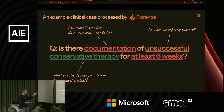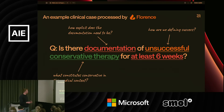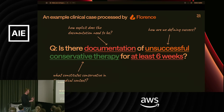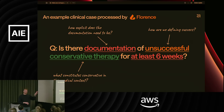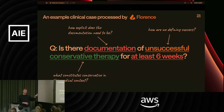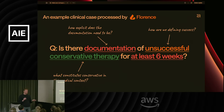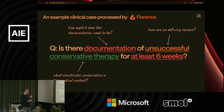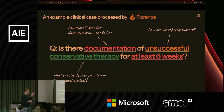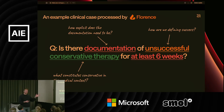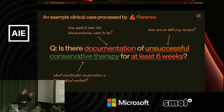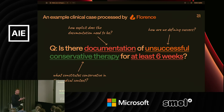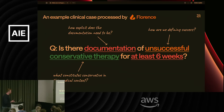And then finally, 'documentation for at least six weeks.' Again, there's complexity: if the medical record says they started physical therapy eight weeks ago but it's never mentioned again, can we assume they've been doing it for eight weeks? Or do we need explicit documentation that they started treatment, did it for eight weeks, and completed it? Where do we draw the line in terms of what we can infer?